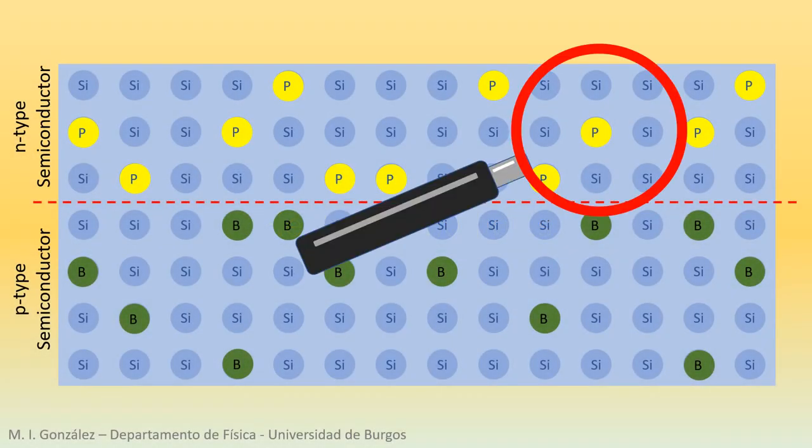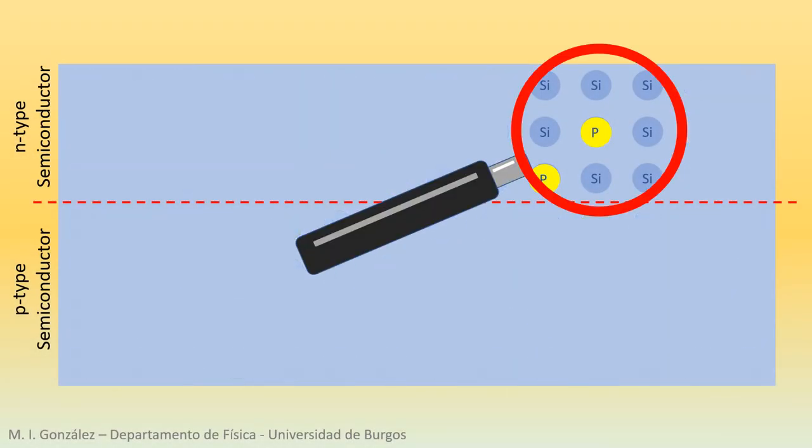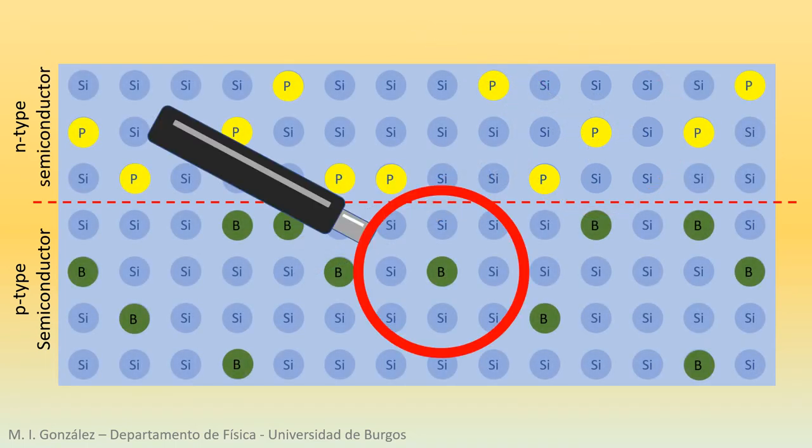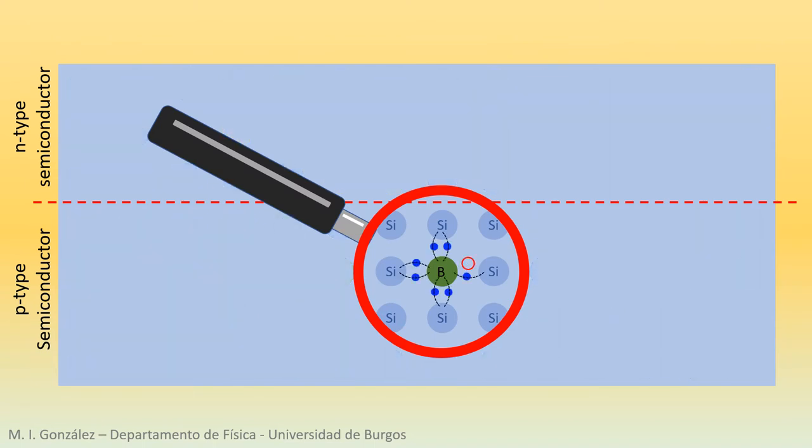The fifth electron of phosphorus remains unpaired, ready to conduct electricity. Boron has three valence electrons instead of four. The vacancy is what we call a hole. It can accommodate an electron wandering around.